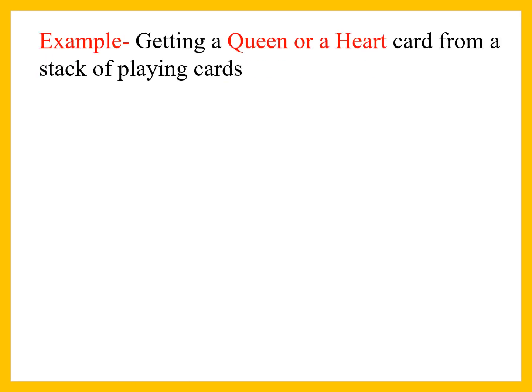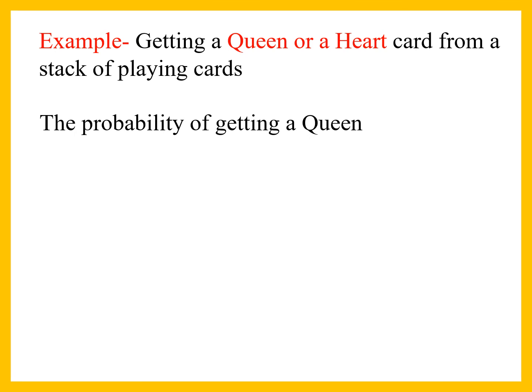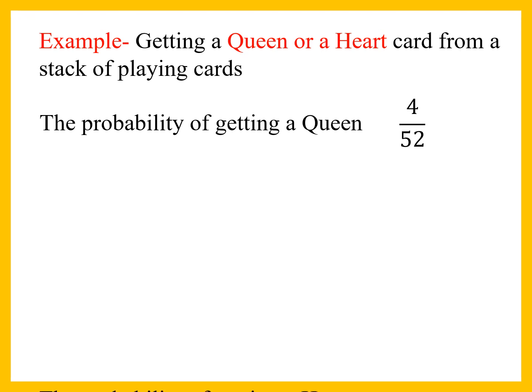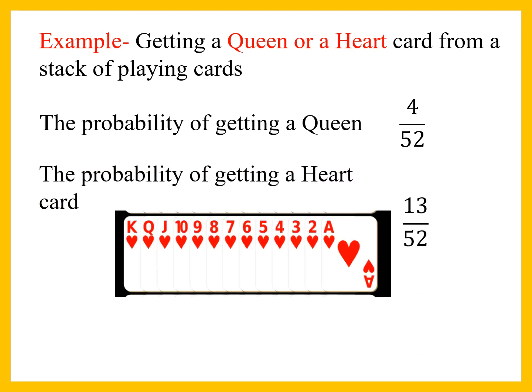Let us take an example of drawing a card from a deck of 52 cards and getting a queen or a heart card. The probability of getting a queen is 4 by 52, since there are 4 queens in a deck of 52 cards. The probability of getting a heart card is 13 by 52, since there are 13 heart-shaped cards in a deck.